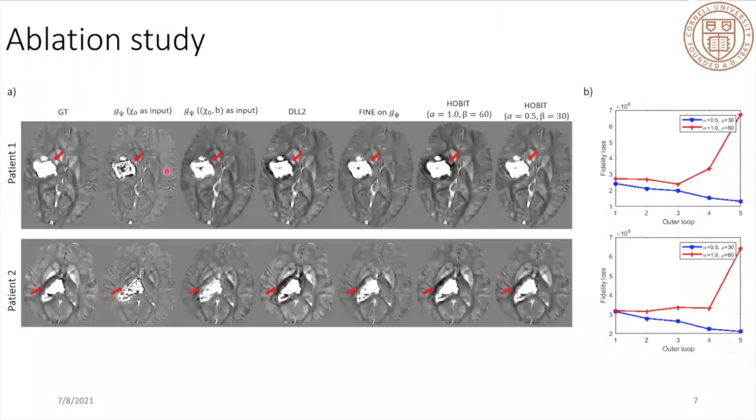In our ablation study, we first compare the network output of this two-step pre-training with and without this input local field concatenation. Without this input field information, the relative contrast was lost, and in addition, the veins were not recovered that well. Then we compared the explicit network output regularization for image space iterative reconstruction, DIL2, and this vanilla fine-tuning on the pre-trained second network G. As can be seen, fine-tuning the second network has better image quality on the hemorrhage with less shadow artifact.